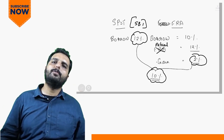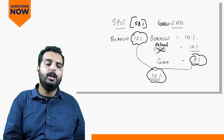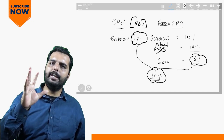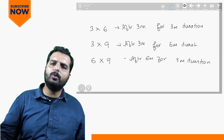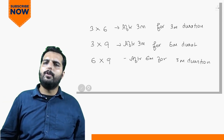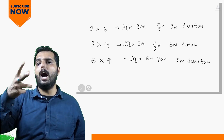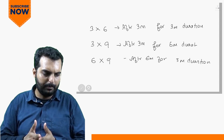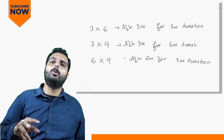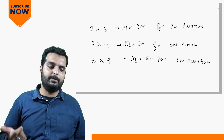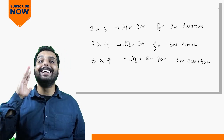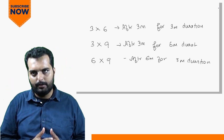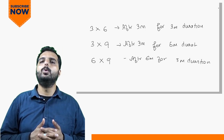Now let's look at FRA terminologies. A 3×6 FRA means I am borrowing after 3 months for 3 months duration, expiring at the end of the 6th month. A 3×9 FRA means borrowing after 3 months for 6 months duration, expiring at the end of the 9th month. A 6×9 FRA means borrowing after 6 months for a duration of 3 months.